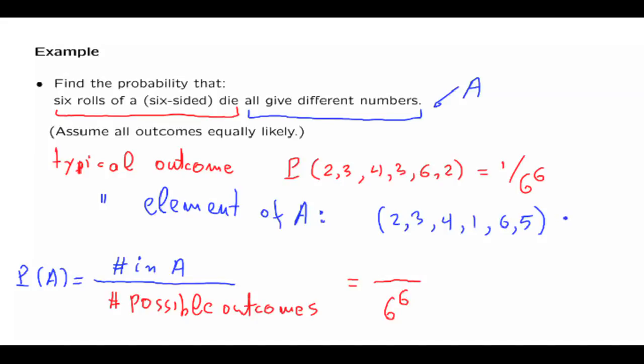In how many ways can we order six elements? This is the number of permutations of a set of six elements. And as we discussed earlier, this is equal to 6 factorial. So we have now counted the number of outcomes that make event A happen, which is 6 factorial. And by calculating this ratio, we have obtained the probability of the desired event.